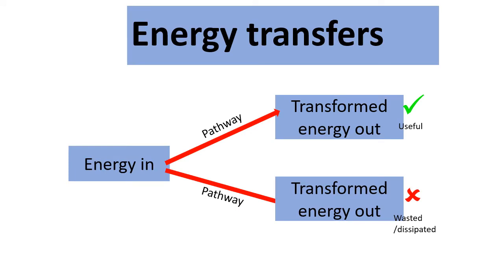Based on energy transfer: when energy starts from the input, it uses pathways and is transformed into different forms. Sometimes it is transformed into useful energy and sometimes the energy is wasted or dissipated. To calculate efficiency, we should be well aware of what energy is useful and what energy is being wasted.